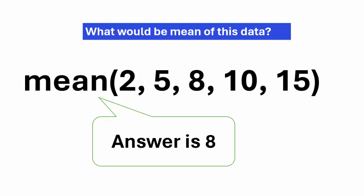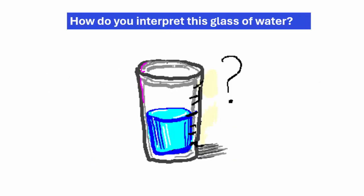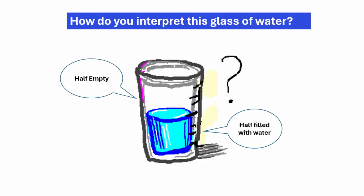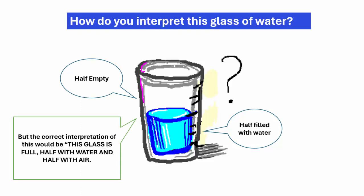The second thing — why statistics is an art. Suppose we have to interpret a glass of water. Some may say it is half filled with water; some may say it is half empty. But one experienced person in analysis will reply differently: 'This glass is full — half with water and half with air.' That is the correct interpretation. In this way it is an art, because art always requires experience or practice.